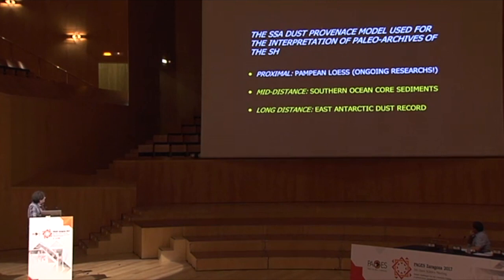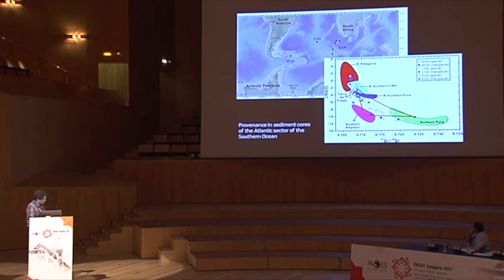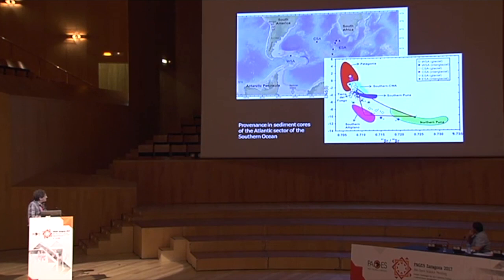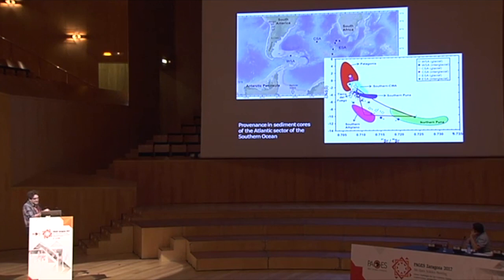We can use this provenance model for interpretation of paleoarchives of the Southern Hemisphere. Today I will show data from Southern Ocean core sediments and East Antarctic dust records. When we plot the isotopic composition of sediment cores from the Atlantic sector of the Southern Ocean, all these data fit very well within our model. An important group of samples falls on a mixing line between the South Central West area and the Southern Altiplano, similar to data from the Central Pampa. Another group falls on a mixing line between the Southern Altiplano and Northern Puna.